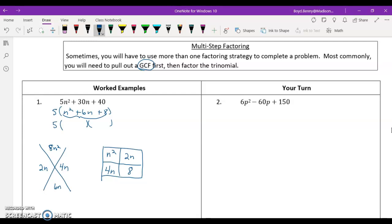What two numbers multiply to give me 8 and add to give me 6? That would be 2n and 4n. If I factor out the common factor here, we can see that 4 is the greatest common factor in the bottom, and then 4 times 2 is 8. So our three factors are 5, n plus 2, and n plus 4.